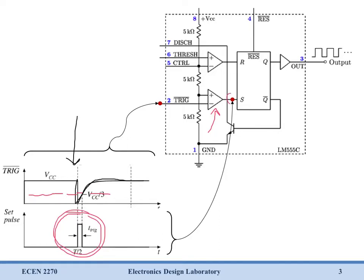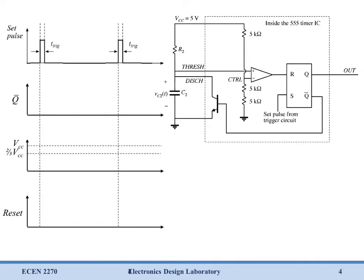And we end up setting our RS flip-flop, which makes Q go high and Q bar go low. So as soon as we set, Q goes high, Q bar goes low. Now, if we just know that that happens, we can take a look at how the rest of the circuit functions.